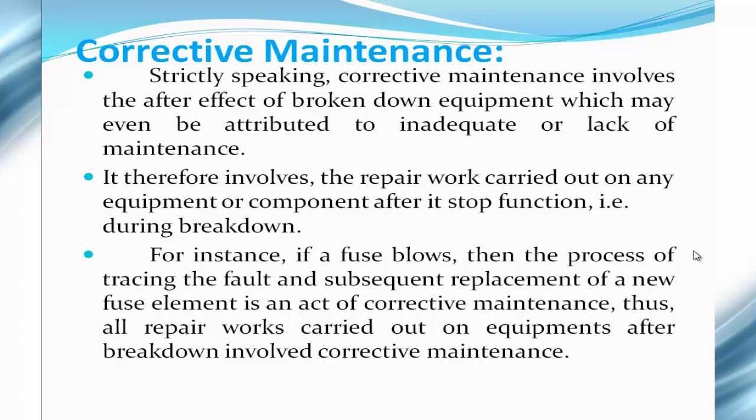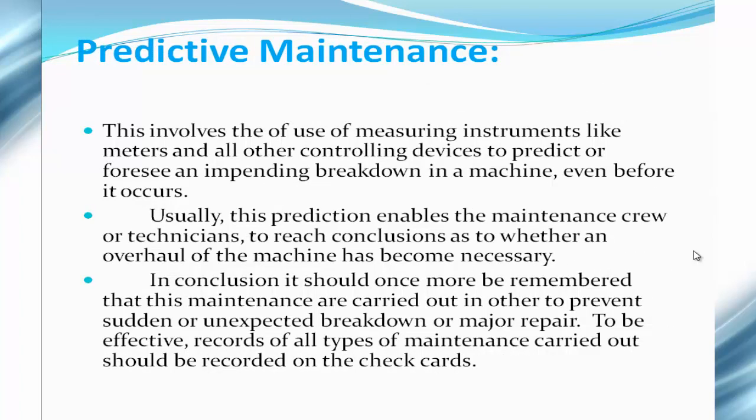Corrective maintenance is the type of maintenance which involves a broken-down equipment. It refers to the after-effect of a breakdown, which may even be attributed to inadequate or lack of maintenance. It involves the repair work carried out on any equipment or component after it has stopped functioning. For instance, if a fuse blows, the process of tracing the fault and subsequently replacing the fuse element is an act of corrective maintenance. All repair work carried out on equipment after breakdown constitutes corrective maintenance.